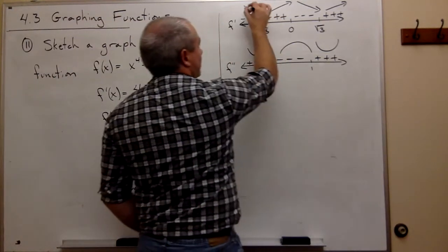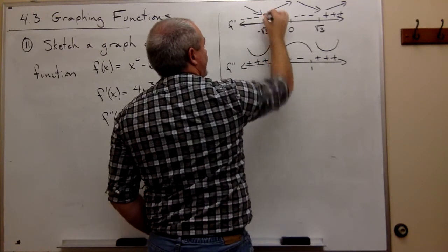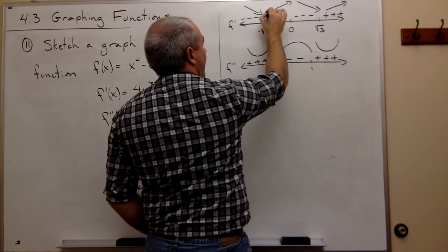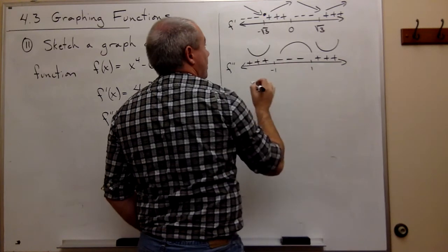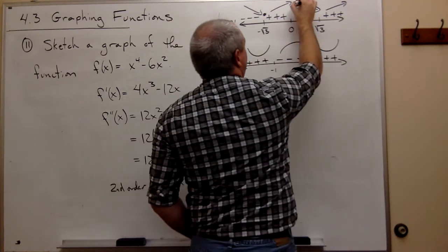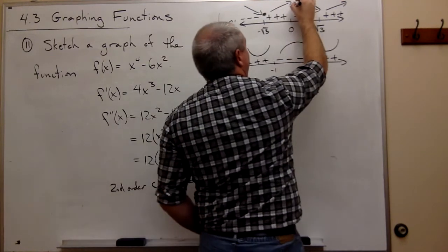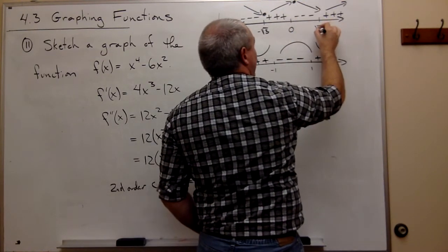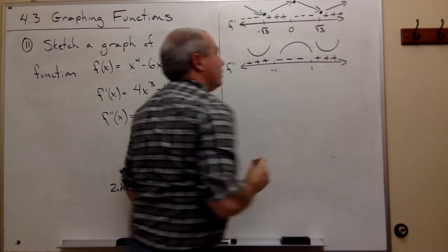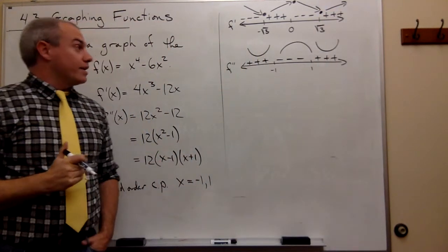What I also see here is right here at x equals minus root 3, I have a local minimum. At 0, I have a local maximum. And at root 3, I have a local minimum.